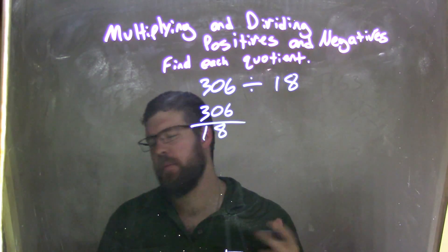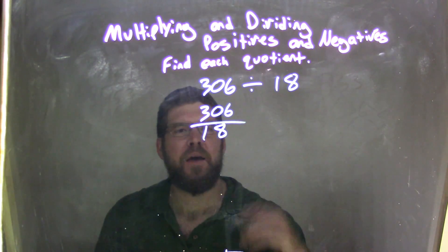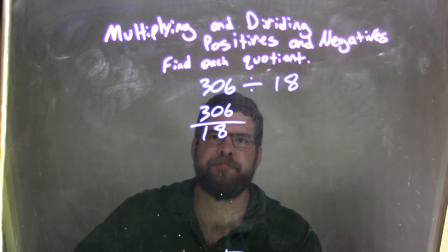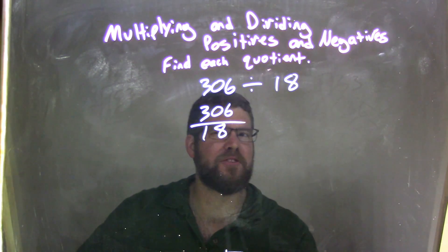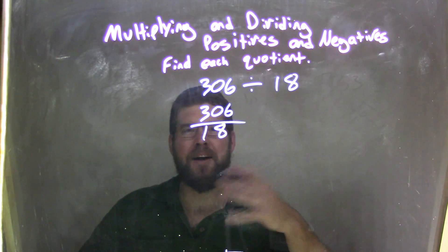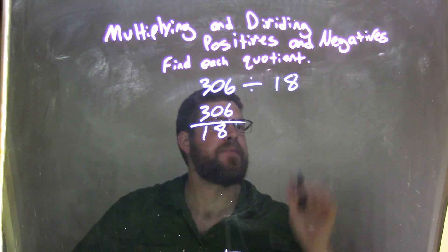Hmm. Annoying. 306. Let's start breaking that down. What numbers? Because right now, I'm looking at it. I don't have a clue. 306. Breaking down. All right, what goes into it?